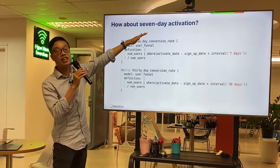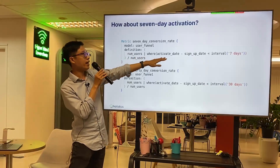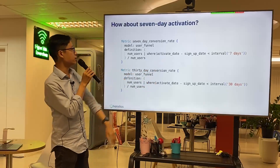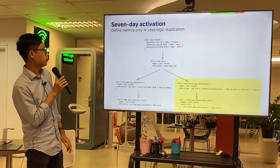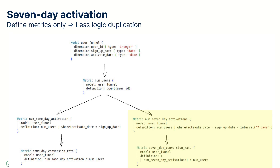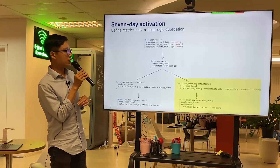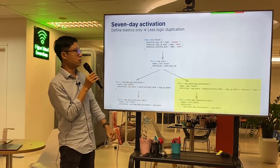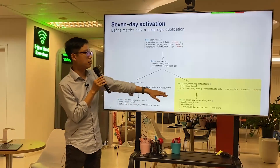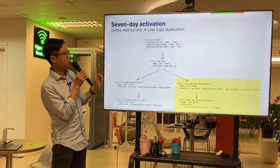For the seven-day activation Bob asked for, you just write: number of users WHERE activate_date is within the interval of seven days. Or for a 30-day variation, just change the number. With metric-centric thinking, the changes are minimal and exactly match the logic required — no extraneous columns or dimensions included.